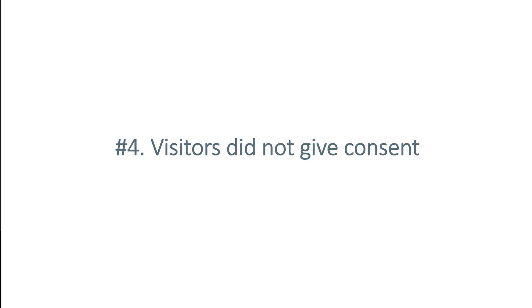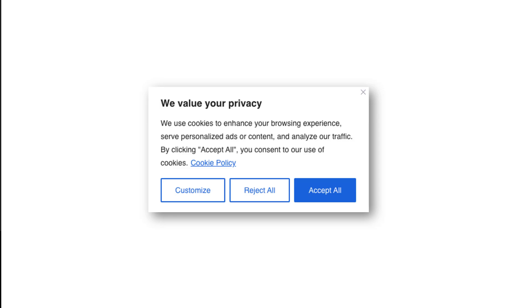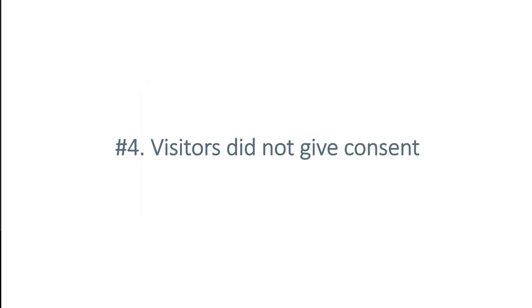If you have implemented a consent pop-up on your website and your tracking codes are connected to it — meaning that if the user clicks reject, you don't fire tracking codes — then you will lose a portion of your data. Even if you have implemented Google's Consent Mode, which is designed to fill in gaps in your missing data, it will still not fill in 100% of what you are not tracking. You should accept that your data will not be perfect, but it is completely possible to work with good enough data.